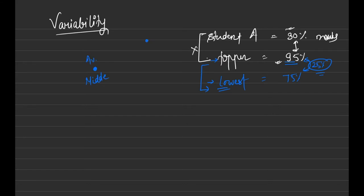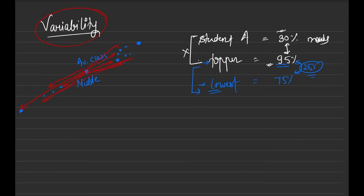Let's say this middle point is the average of the class. The topper is somewhere above it, the weaker student is somewhere below it, and other students are scattered around. The deviation of students from the middle point or the average also comes under the concept of variability, because it's very important to understand the data spread.